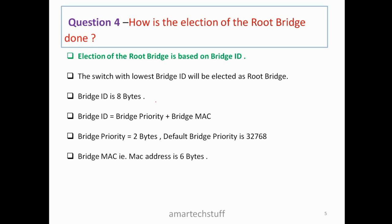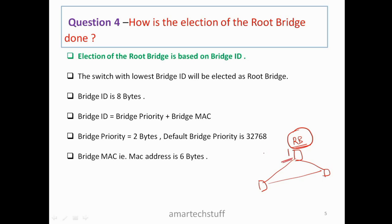Question number 4: how is the root bridge elected? I mentioned that out of three switches, one gets elected as root bridge. This election depends completely upon the bridge ID. The switch with the lowest bridge ID gets elected as the root bridge. The bridge ID depends upon two things: bridge priority, which is 2 bytes with a default value of 32768, and bridge MAC address, which is 6 bytes.